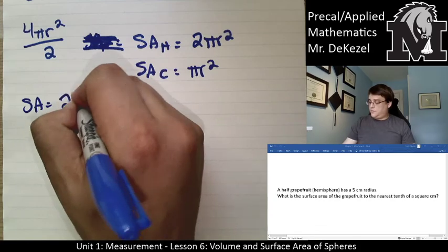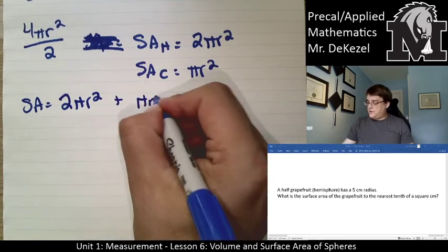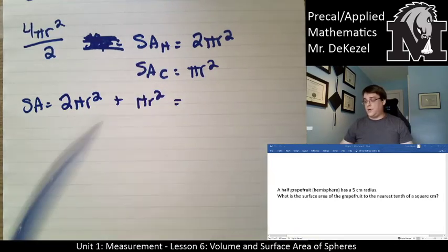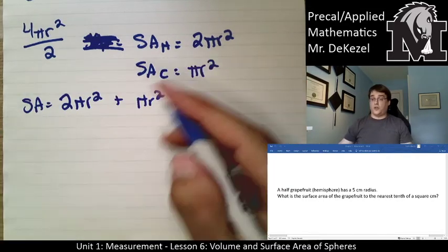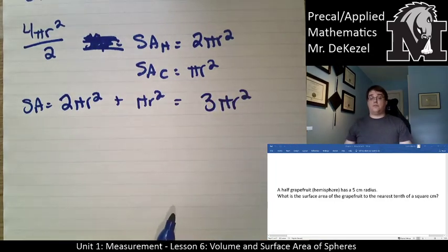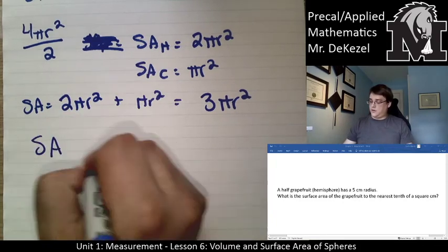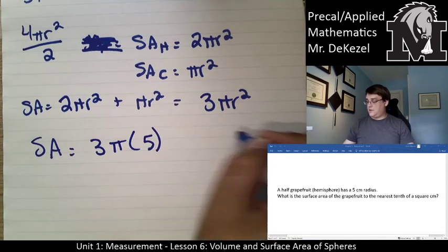So the whole thing, the surface area of the entire thing, is going to be 2πr², that is the bottom portion of the grapefruit, the outside of it, the hemisphere, plus πr², which is the top portion. And you can actually add these together: 2πr² plus 1πr² is 3πr². So the surface area of a hemisphere total is 3πr². So I can use that formula now to find out what the surface area would be, and all I need to know is the radius, which I have.